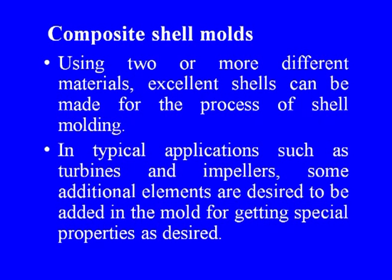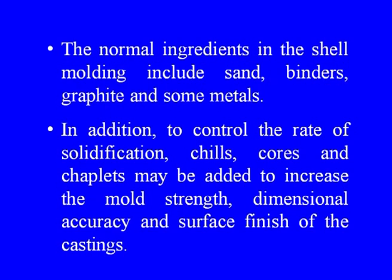Using two or more different materials, excellent shells can be made for the shell molding process. In typical applications such as turbines and impellers, additional elements are added to the mold for special properties. The normal ingredients include sand, binders, graphite and some metals. In addition, to control the rate of solidification, chills, cores and chaplets may be added to increase the mold strength, dimensional accuracy and surface finish of the castings.